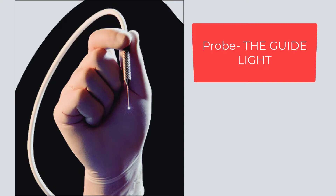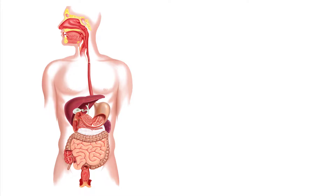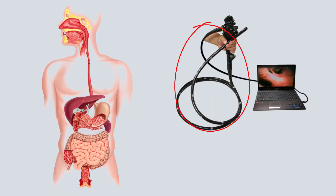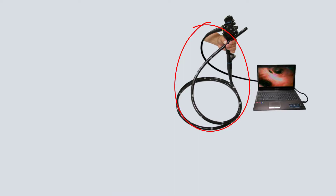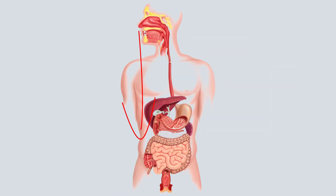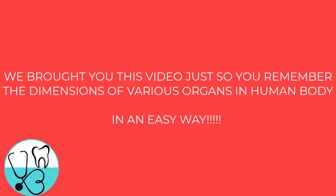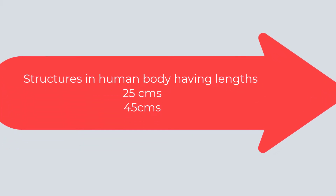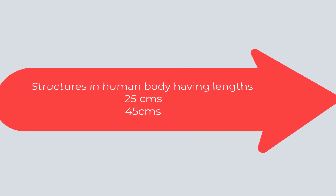These procedures use probes, and knowing organ lengths guides you on how far you need to descend or ascend the probe. For example, to reach the duodenum, you need to know the length of the buccal cavity, esophagus, stomach, and the duodenum itself. This is exactly why we brought you this video — here we'll be talking about structures that are 25 centimeters, and in upcoming videos we'll cover organ lengths of various other organs.